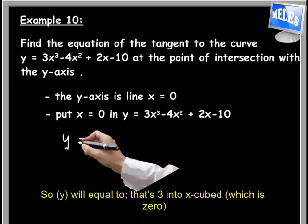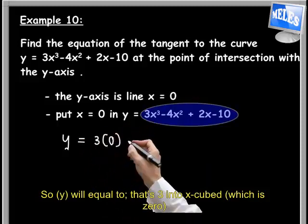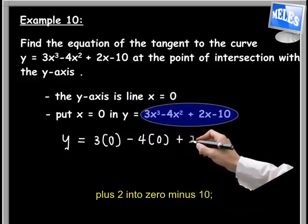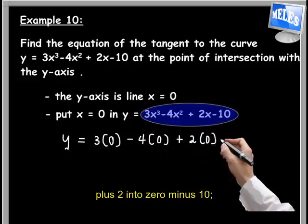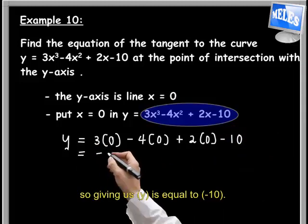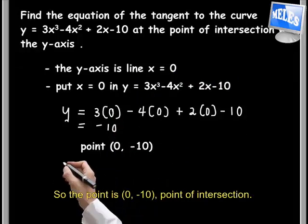So y will equal 3 times 0 cubed, minus 4 times 0 squared, plus 2 times 0, minus 10, giving us y equals negative 10. So the point is (0, -10), point of intersection.